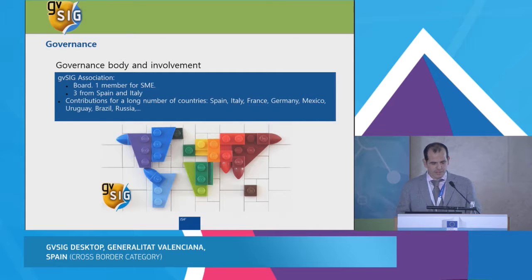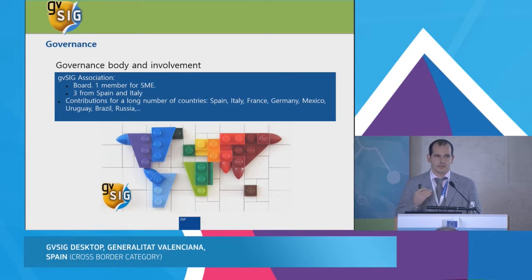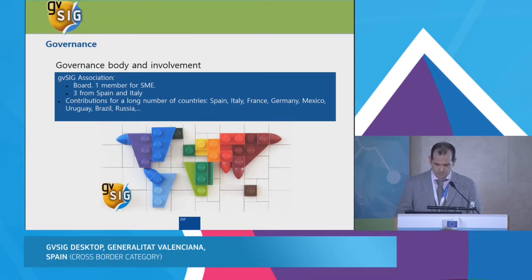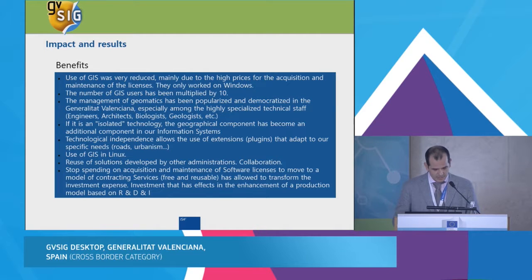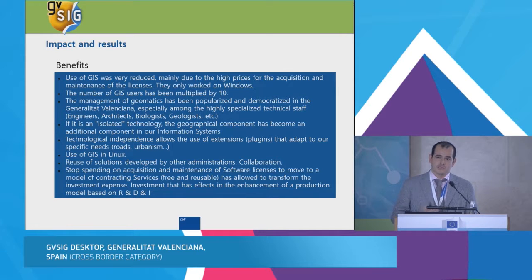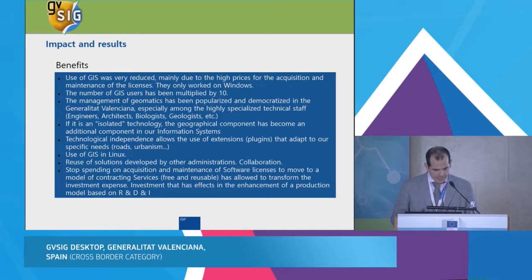Turning now to governance. The GVSIG Association has a board with one member per company. Today we have three Spanish companies and one from Italy on the board, and technical contributions from a large number of countries around the world. In Generalitat Valenciana, we can highlight the following benefits: the number of GIS users has been multiplied by 10; we can adapt GVSIG to our specific needs; we can use GIS on Linux; we reuse tools and solutions developed by other organizations — this is collaboration; we have transformed spending on licenses into investment in services; and we have helped to launch a new model of software production.